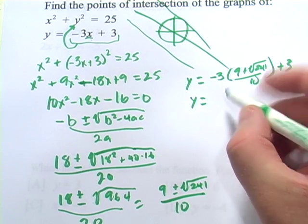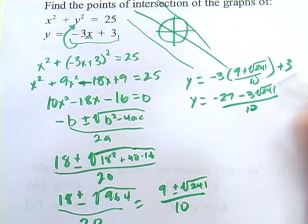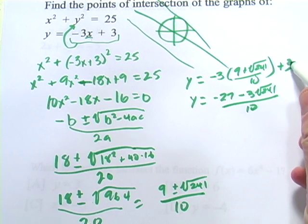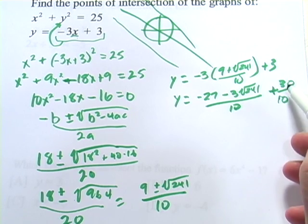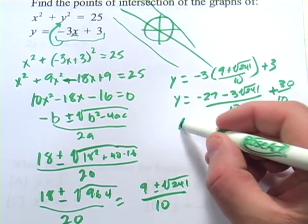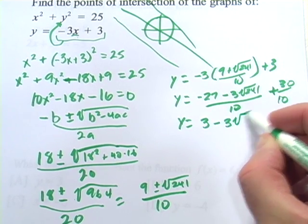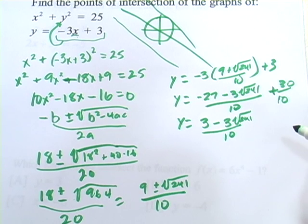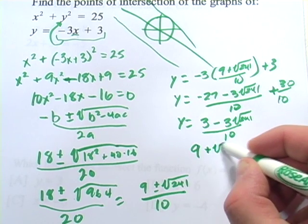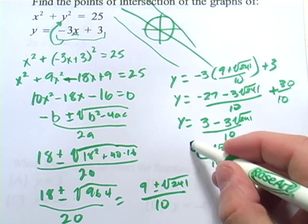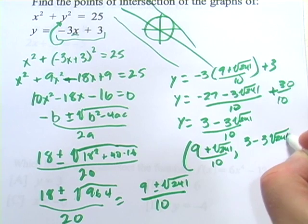So let's go ahead and do that. Let's see. I'll put the negative 3 through. We get negative 27 minus 3 times the square root of 241 over 10. And since we're in tenths here, I'll convert this 3 to tenths, I'll turn that into 30 tenths. And that 30 tenths and the negative 27 tenths here would make this into 3, positive 3, minus 3 times the square root of 241 over 10. And that's probably as simple as we need it there. So one of our points of intersection is going to be 9 plus the square root of 241 over 10, comma, 3 minus 3 times the square root of 241 over 10.